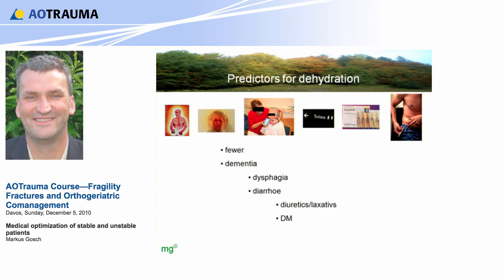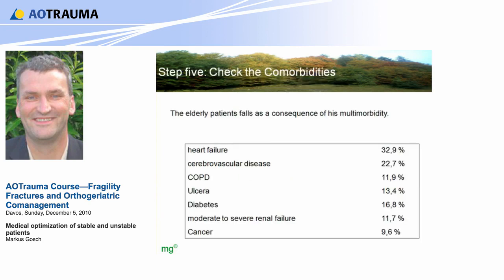Step 5: check the comorbidities. The elderly patient falls as a consequence of their multimorbidity — that's the real reason. They are ill and they fall, not the other way around. These are data from our own hospital: heart failure in 32% of patients, cerebrovascular disease more than 20%, diabetes more than 70%, and also cancer more than 10%. The patients we have to deal with are really, really ill.